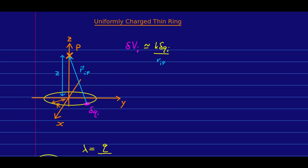And once again, this rip is going to be the square root of z squared plus r squared, just as it was before. And so that gives us our potential due to one bit of the rod.